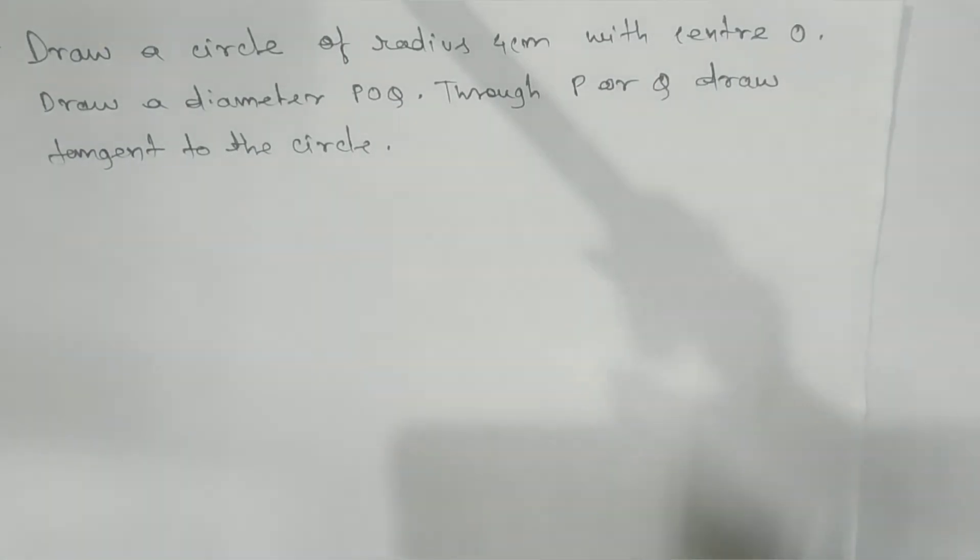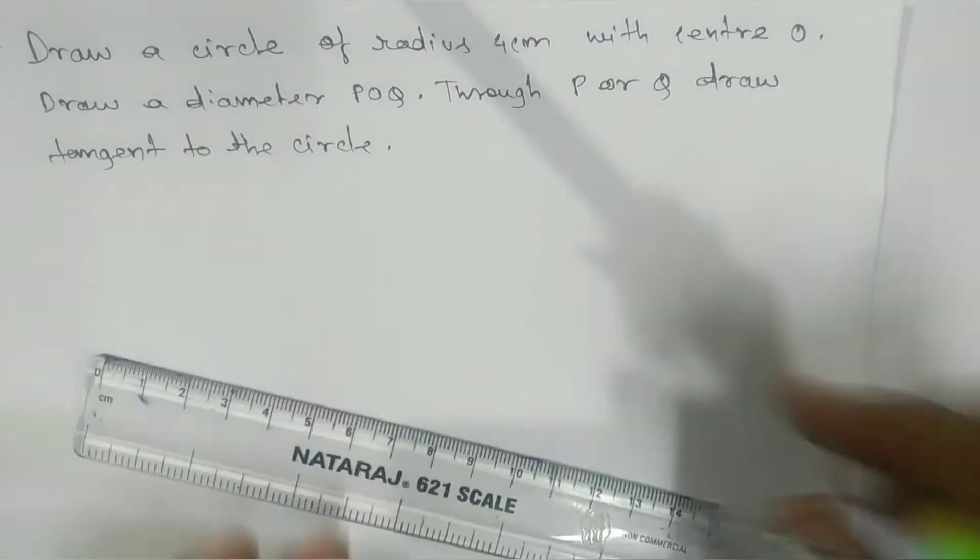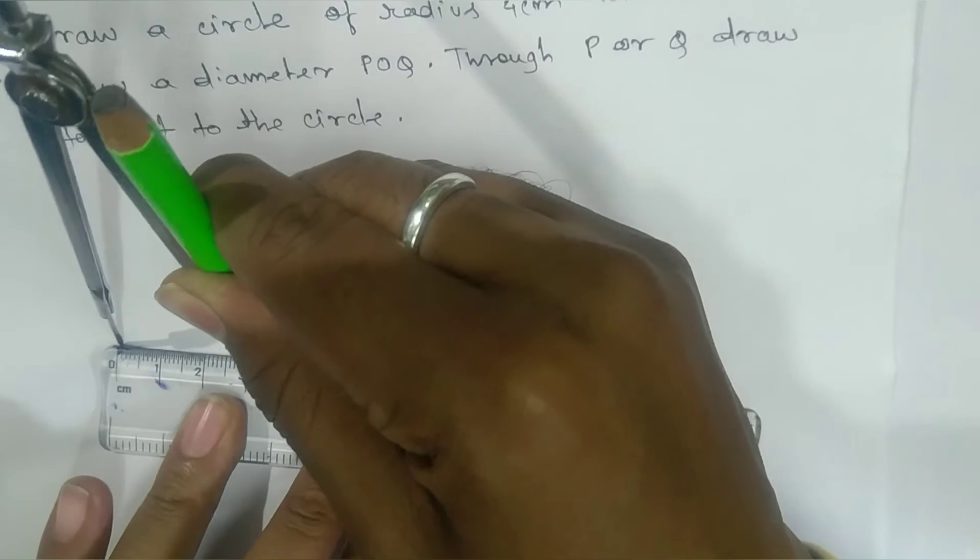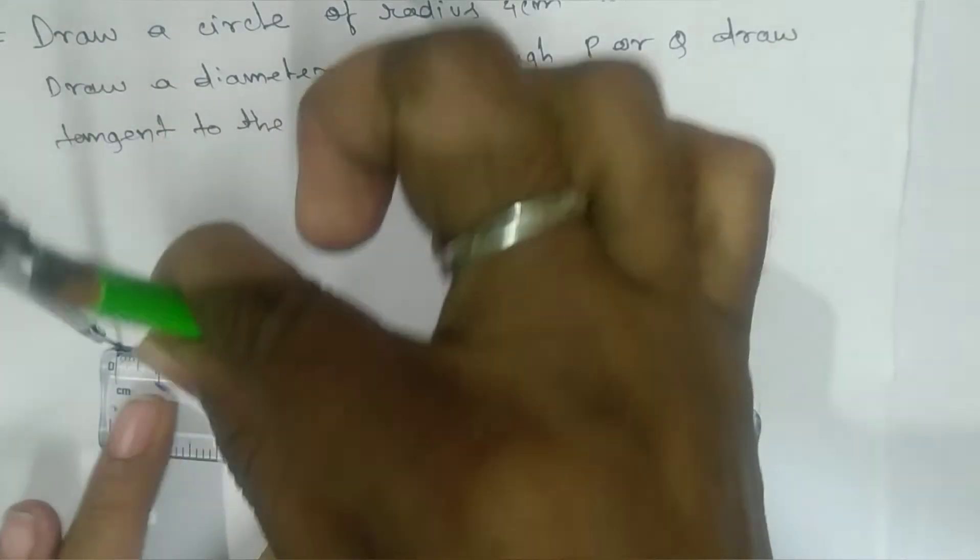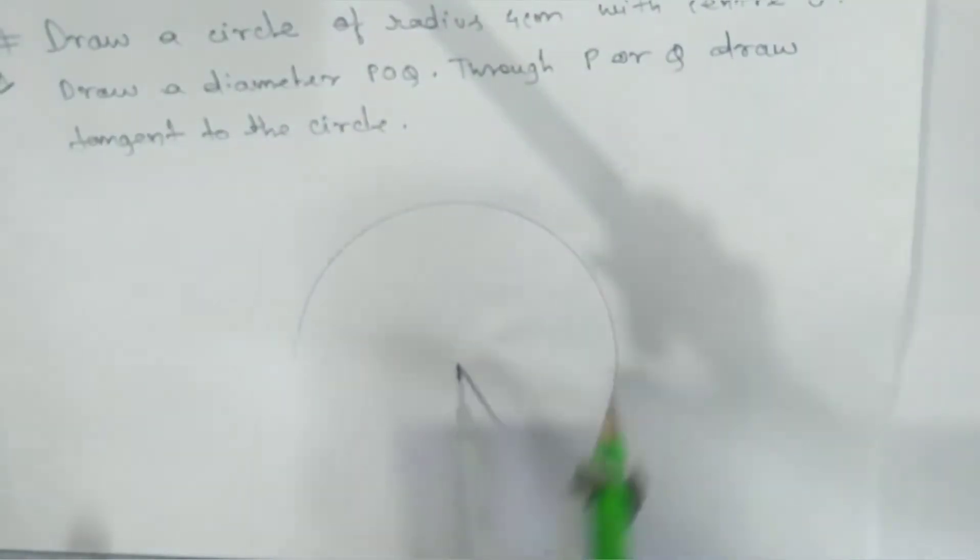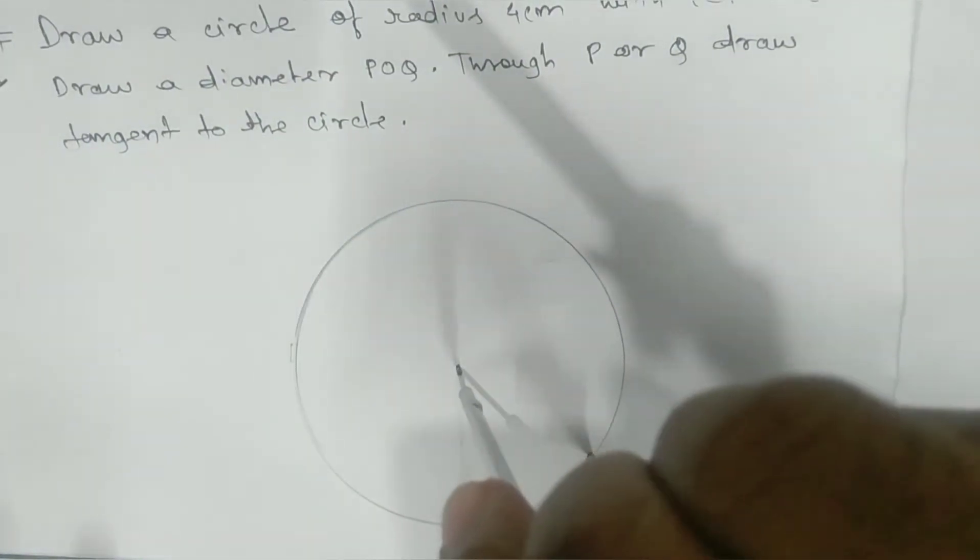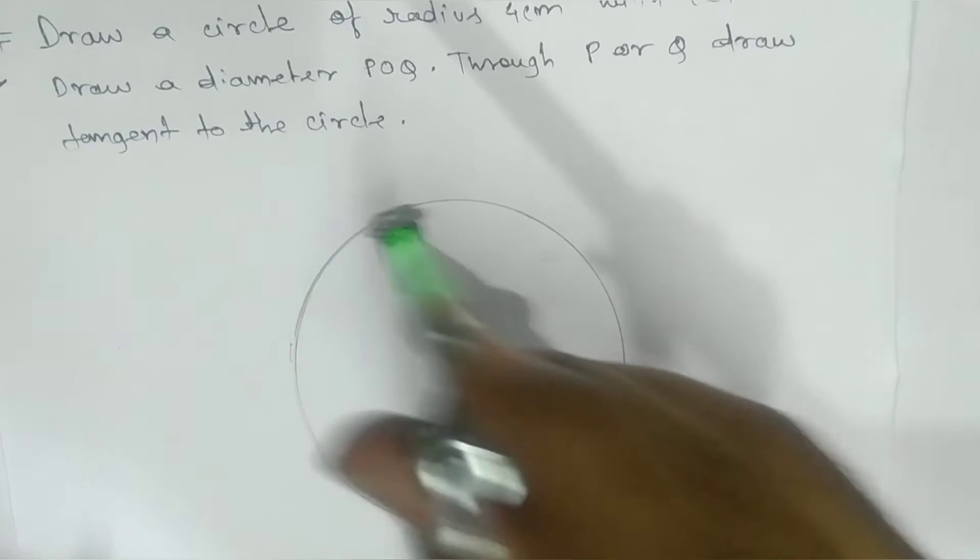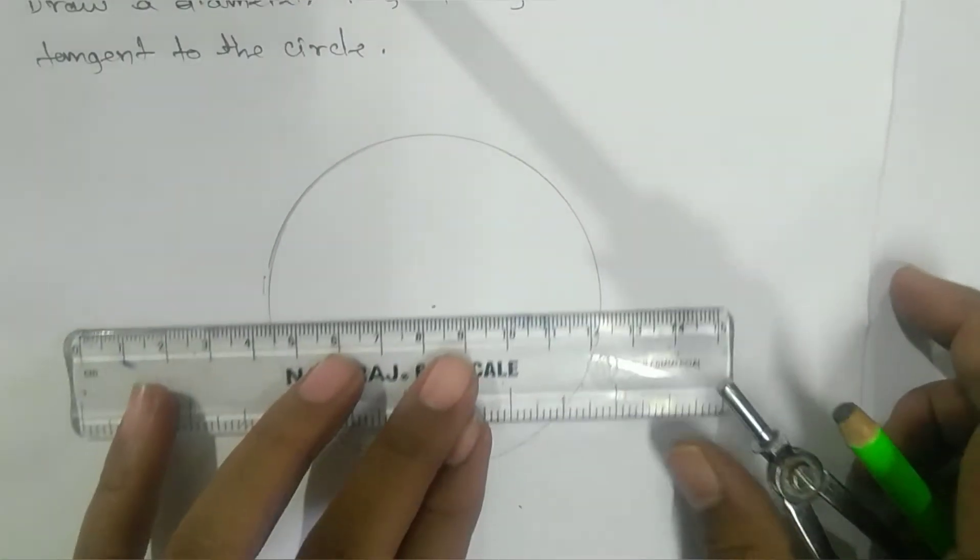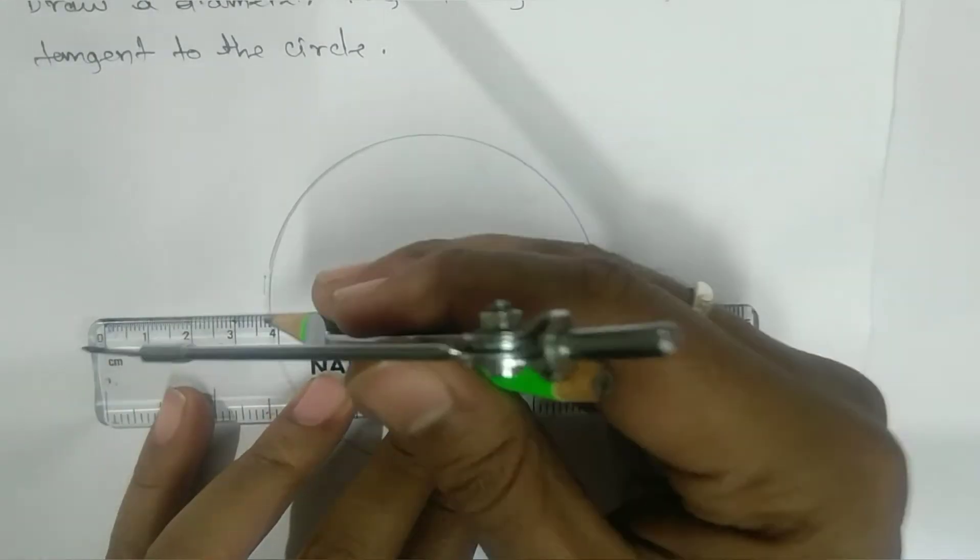First, we'll draw a circle with radius 4 cm. Let me take the radius and measure it - here we have 4 cm, you can see this. Now we'll draw the circle. There's a little mistake here, but no problem. So here we have 4 cm radius.